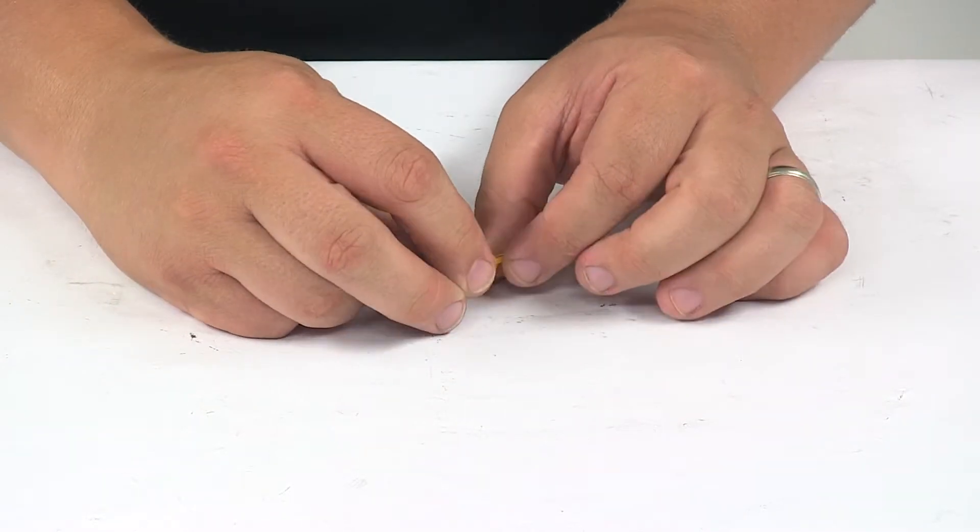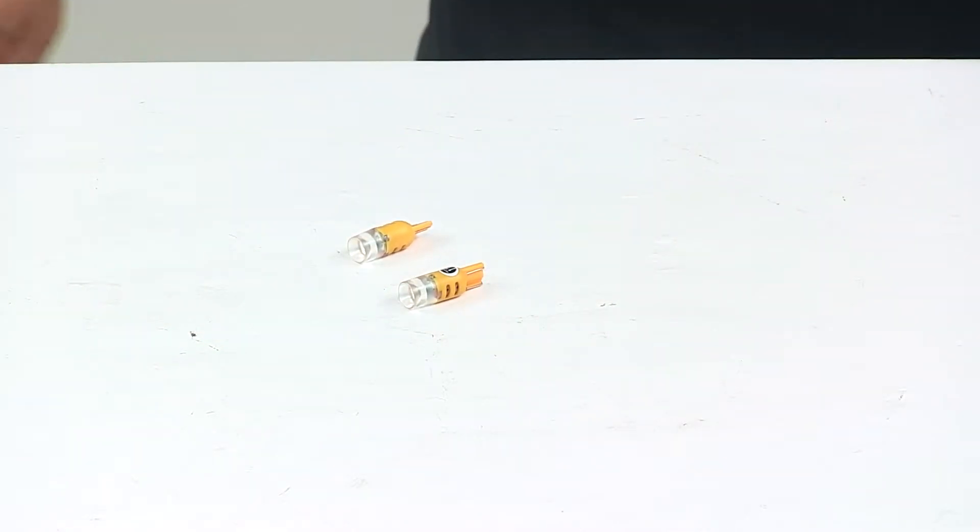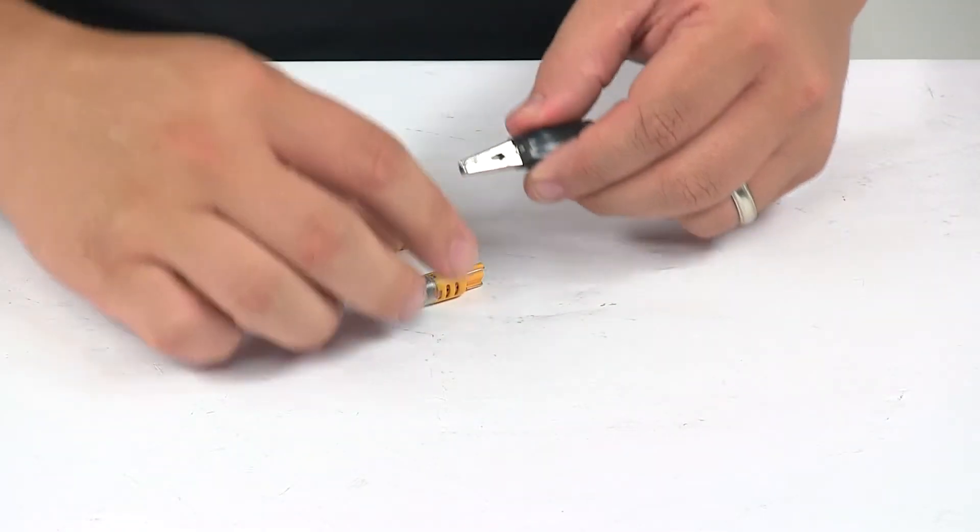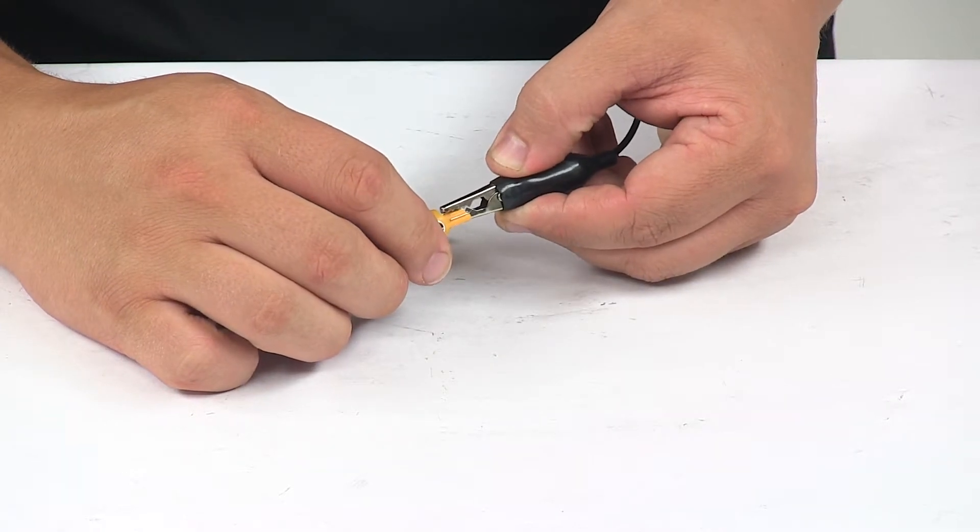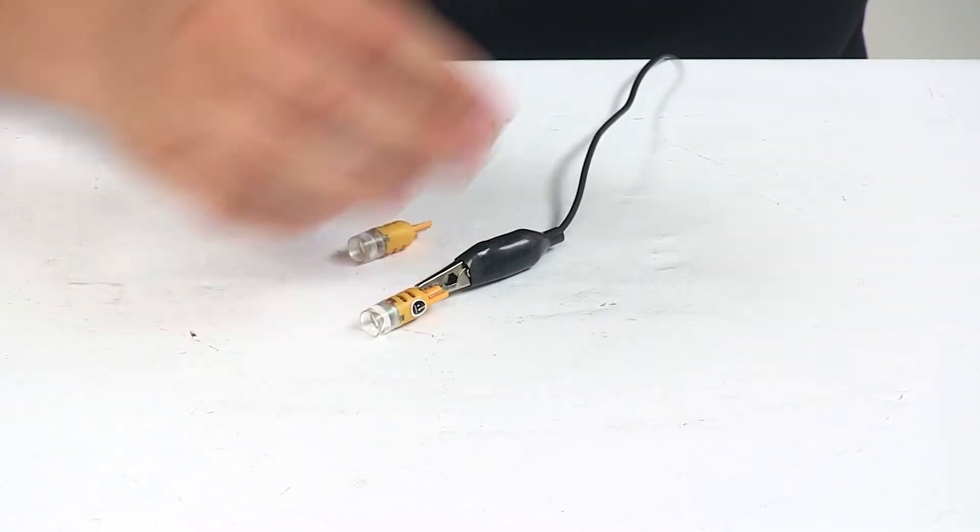So I'm going to go ahead and hook one of them up to power. That way you can see what it looks like with some power running to it, and I'll also be able to turn off our overhead lights so you can see it in a low-light setting.